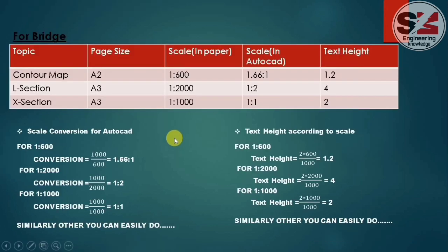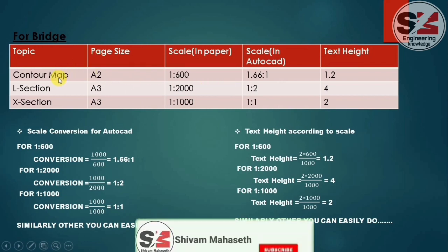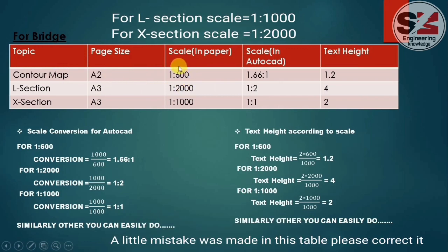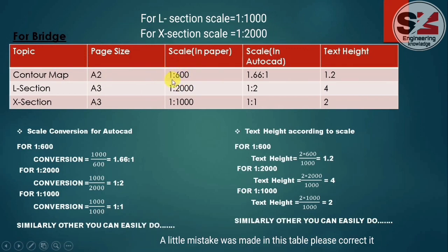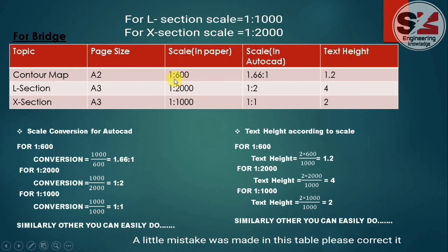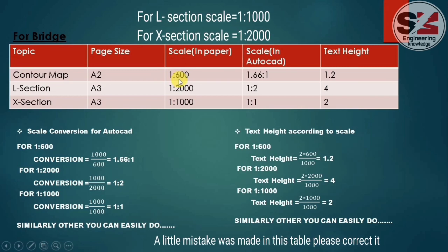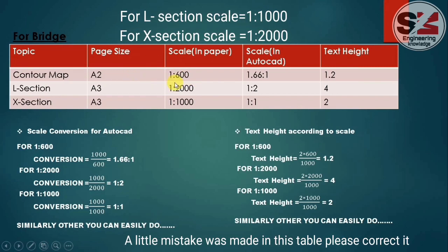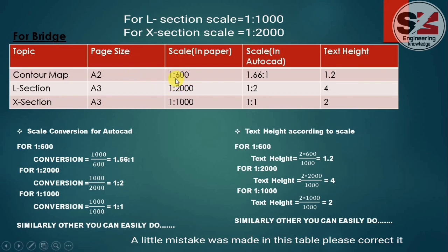During my time, for the bridge — specifically the countermapper bridge — I have taken the paper size as A2 and the scale for the final print as 1:600. That means my drawing on that paper will be in the scale of 1:600.